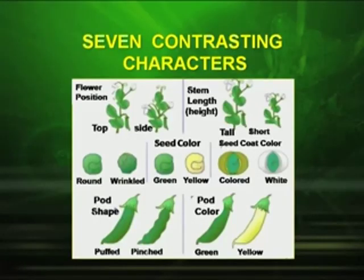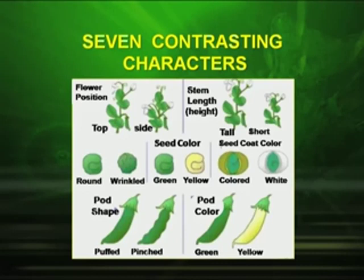Now let us see what were the seven contrasting characters studied by Mendel. The first was flower position — whether the flower is terminal or axillary. The second was stem length — whether the plant was tall or short. Another important character was seed shape — whether the seed was round or wrinkled. The seed color — whether it is green or yellow. And then he also studied seed coat color — whether it is colored or white.